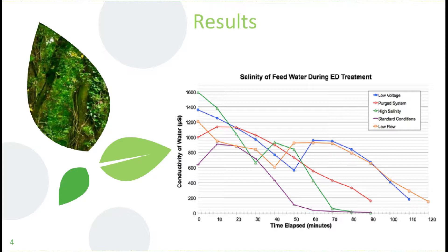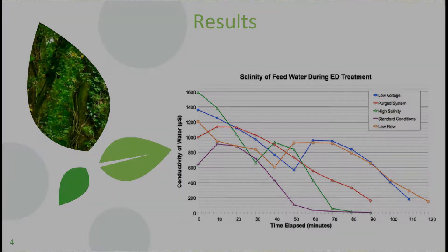We originally ran under standard conditions, which was about 0.6 gallons per minute flow and 48 volts for power. Our various trial runs consisted of lowering the voltage, raising the salinity of the starting feed water, and also lowering the flow rate. But in each of the different scenarios, the salinity went down over time.